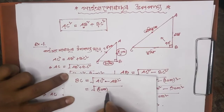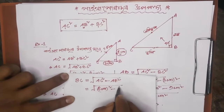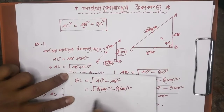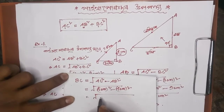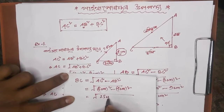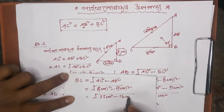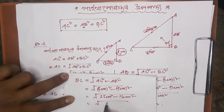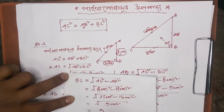Root over 25 cm squared minus 16 cm squared. Root over 50 cm squared minus 2 cm. 5 cm squared minus 3 cm.